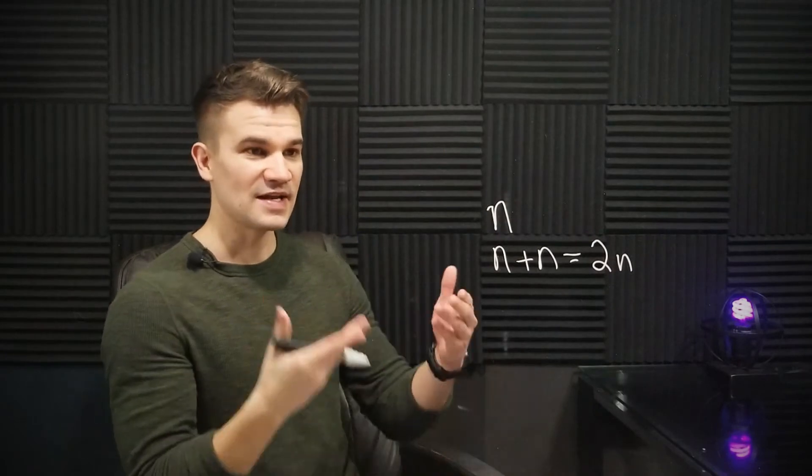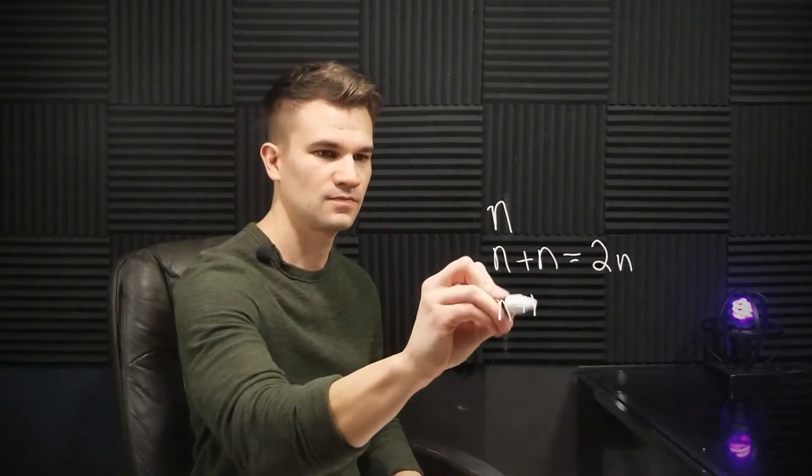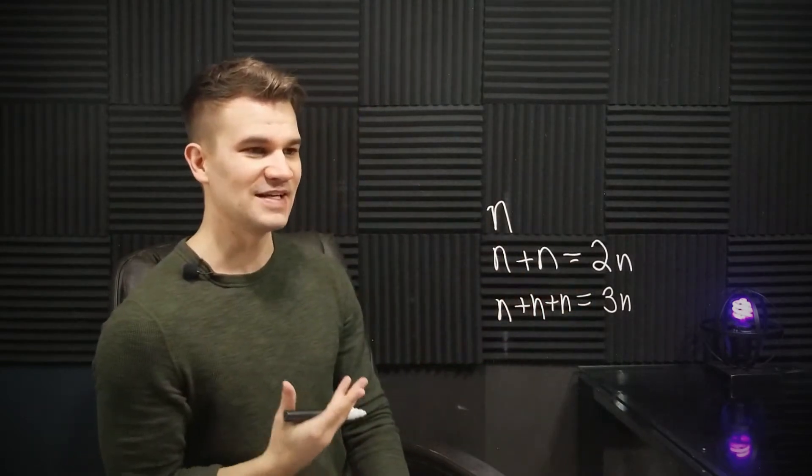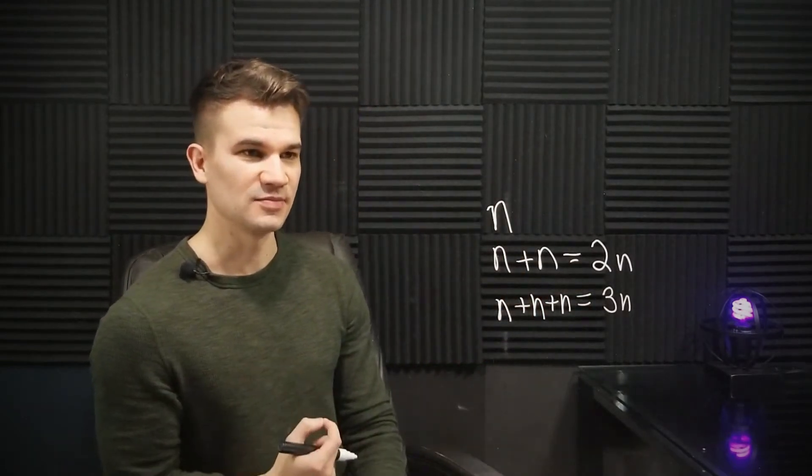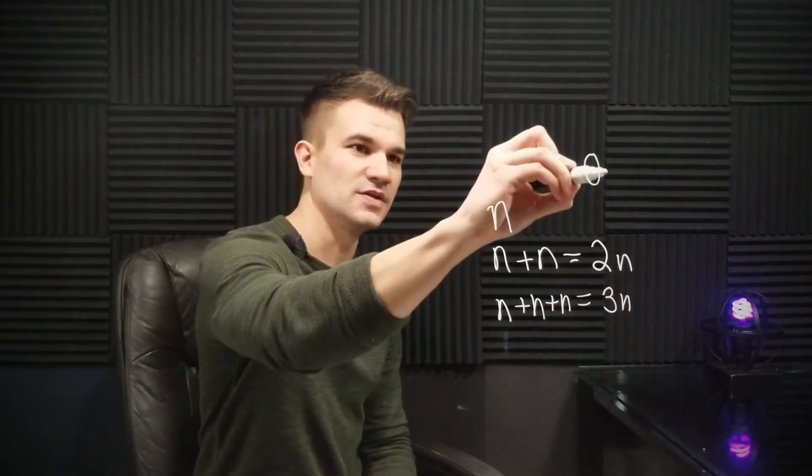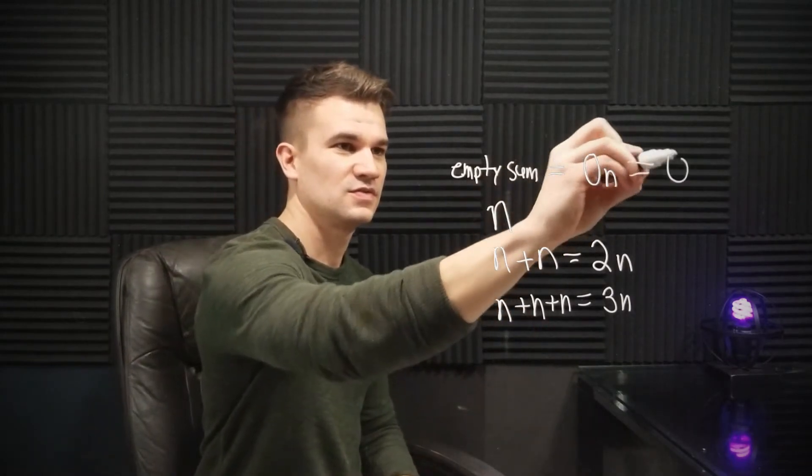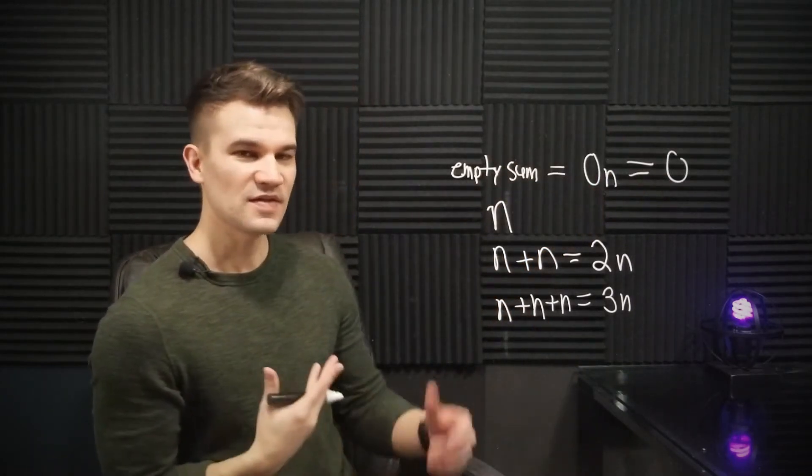But we should probably try to find a way to justify this other than our intuition. Here's a simple way to justify it. Let's say we have a natural number n. Then we have n plus n, we can represent that as 2n. And if we had n plus n plus n, that's of course 3n. So what if we added n up zero times? Well, it stands to reason that would be 0·n, the empty sum 0·n, which is zero.